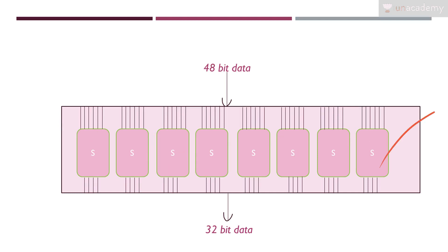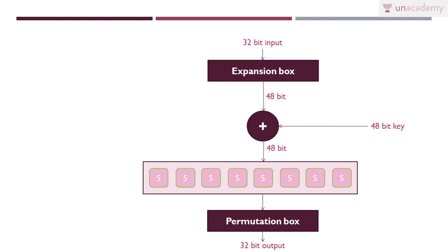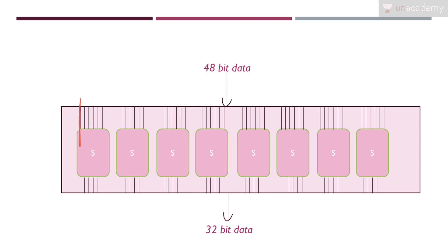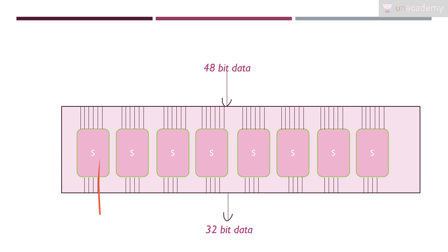There are 8 S-boxes. To each S-box we will give 6 inputs. We are dividing our 48 bit data into 6-bit blocks — so 48 bit divided into eight 6-bit blocks. Each 6-bit block will be given as input to one of these S-boxes. Each S-box will convert this into 4 bit output — so 2 bits are removed from each block — resulting in 32 bit.